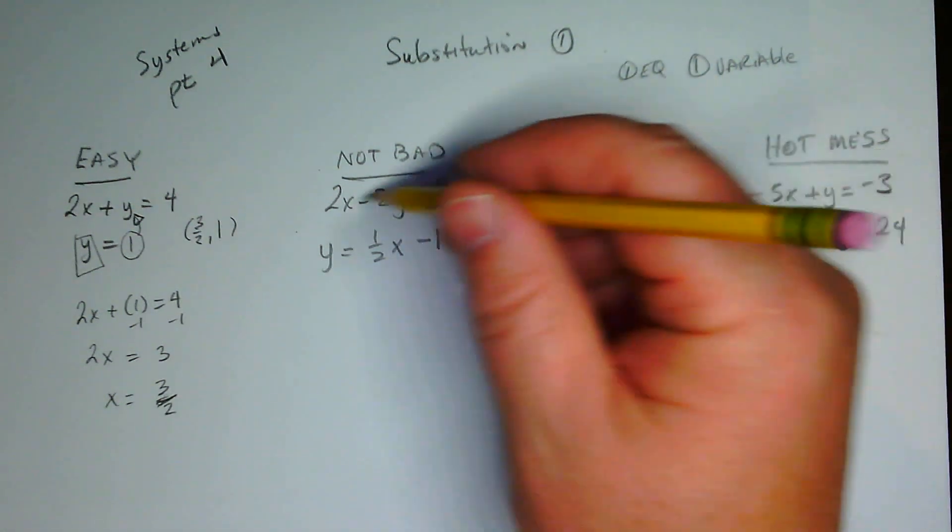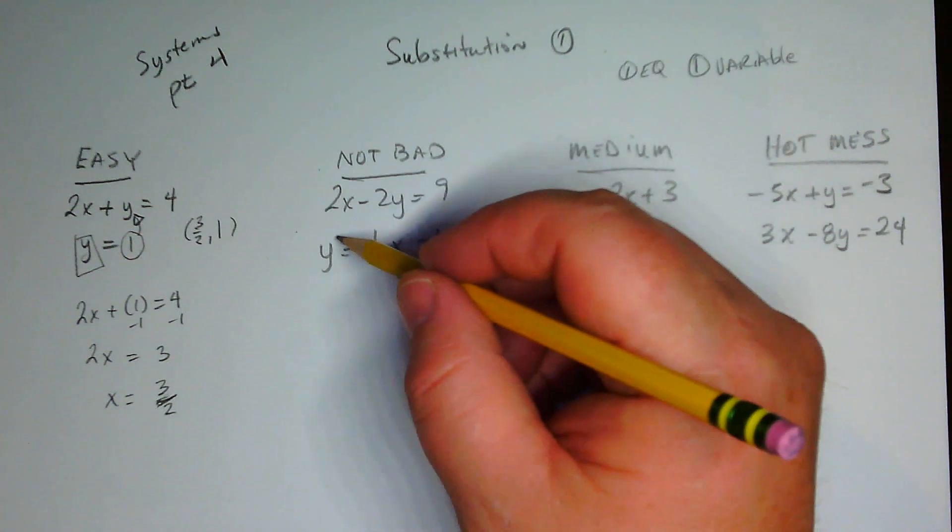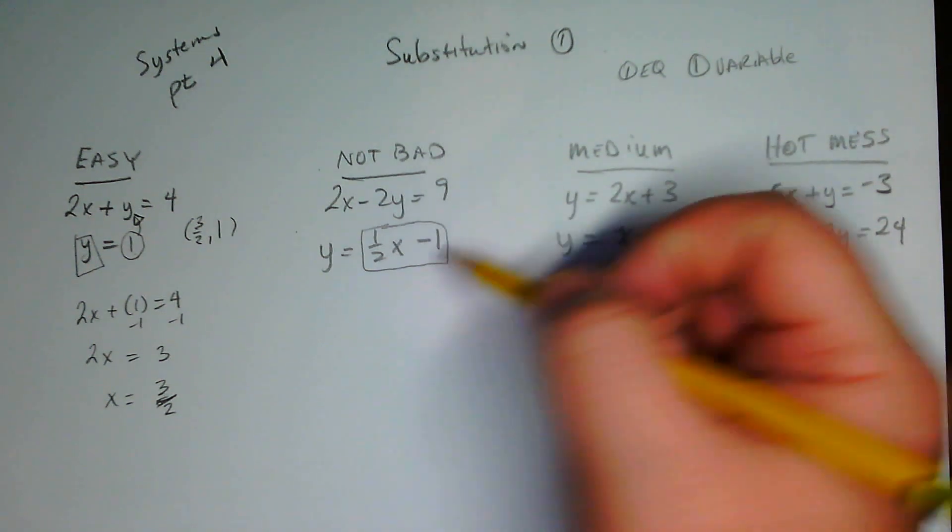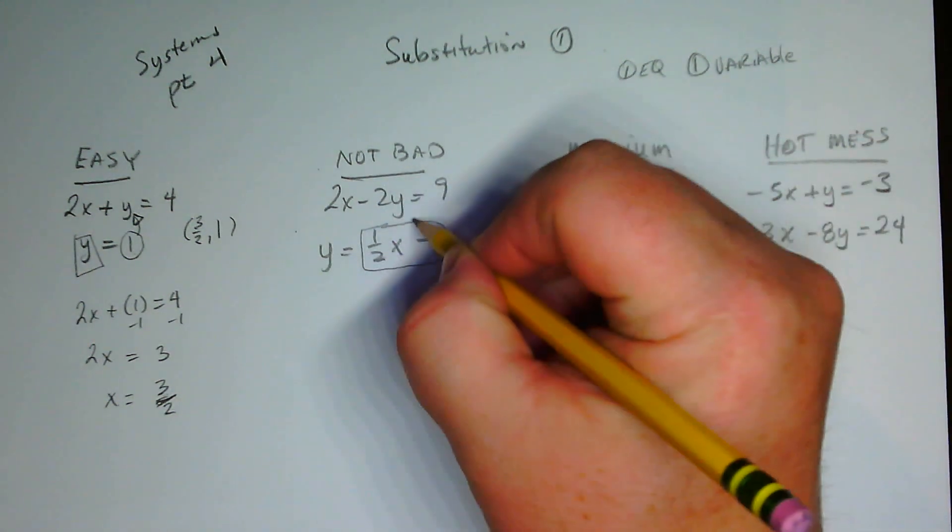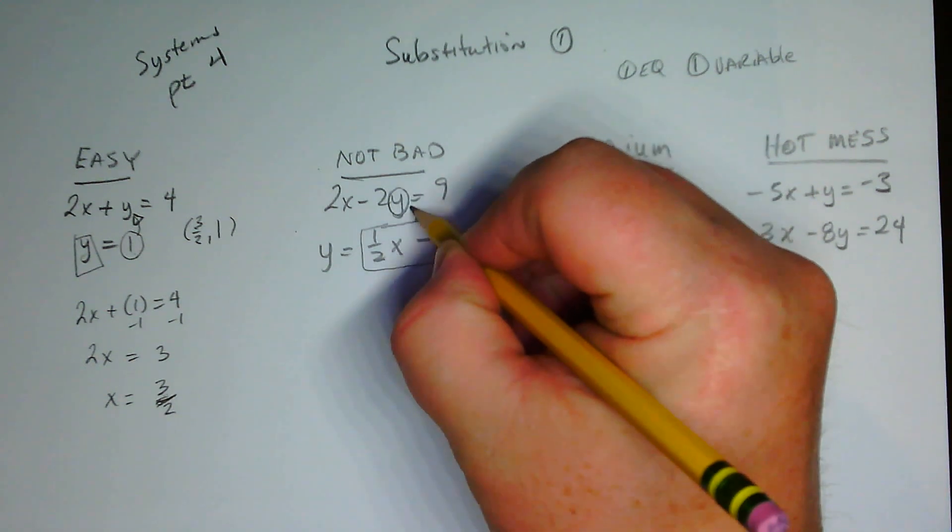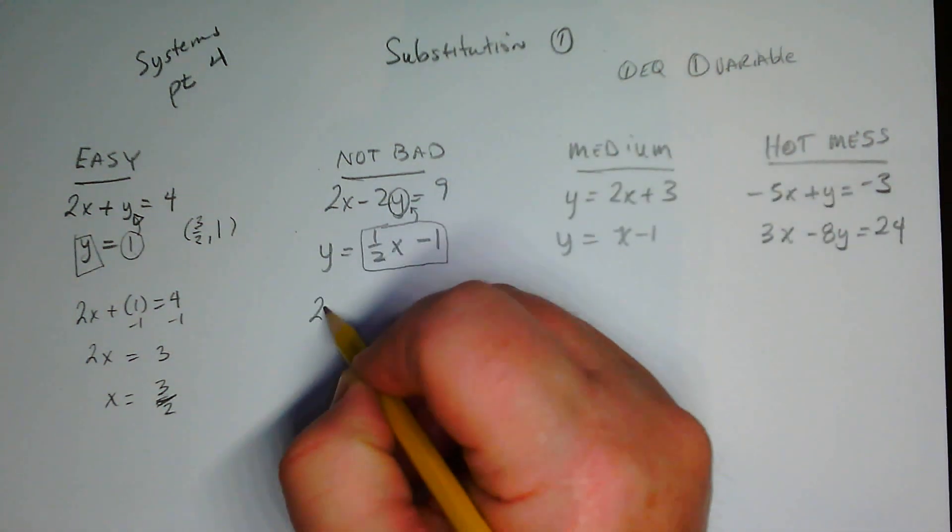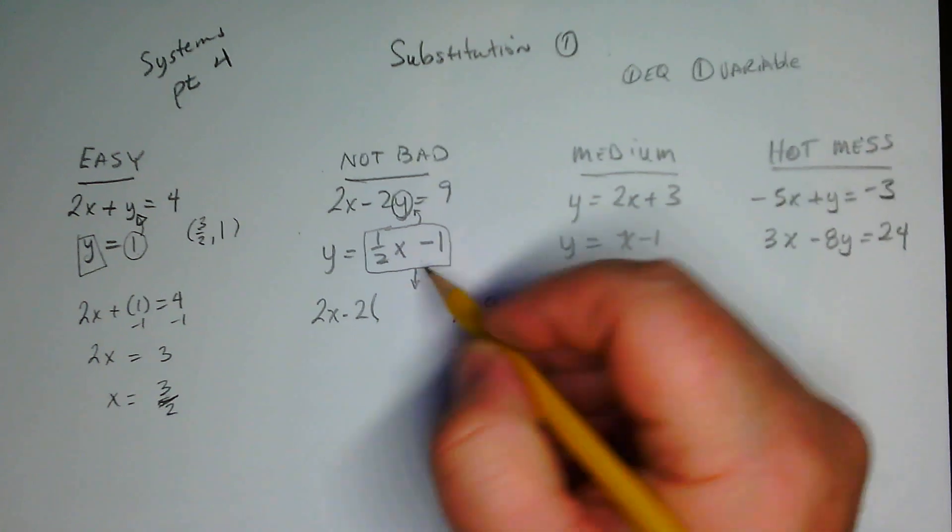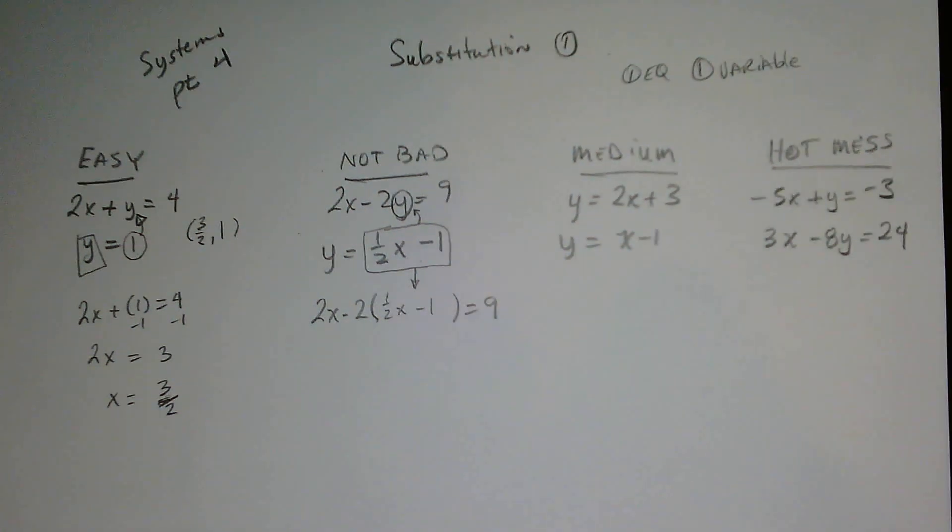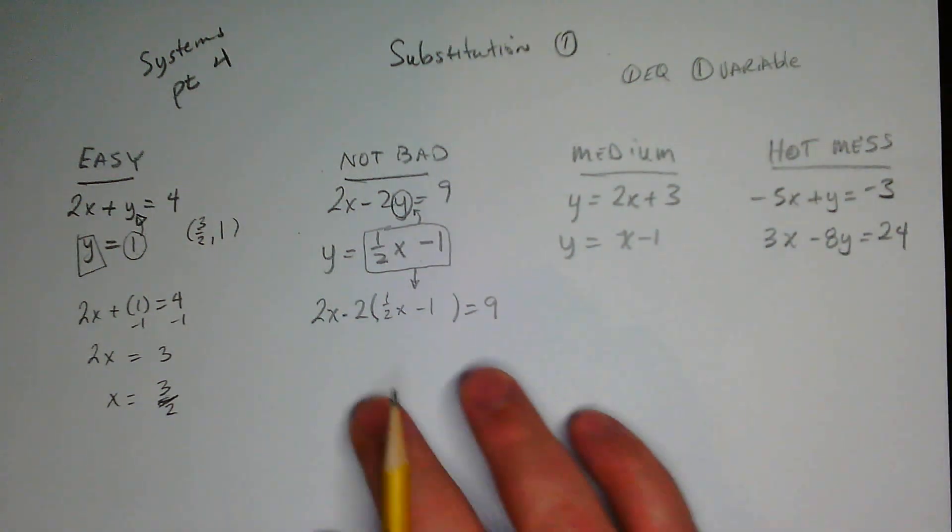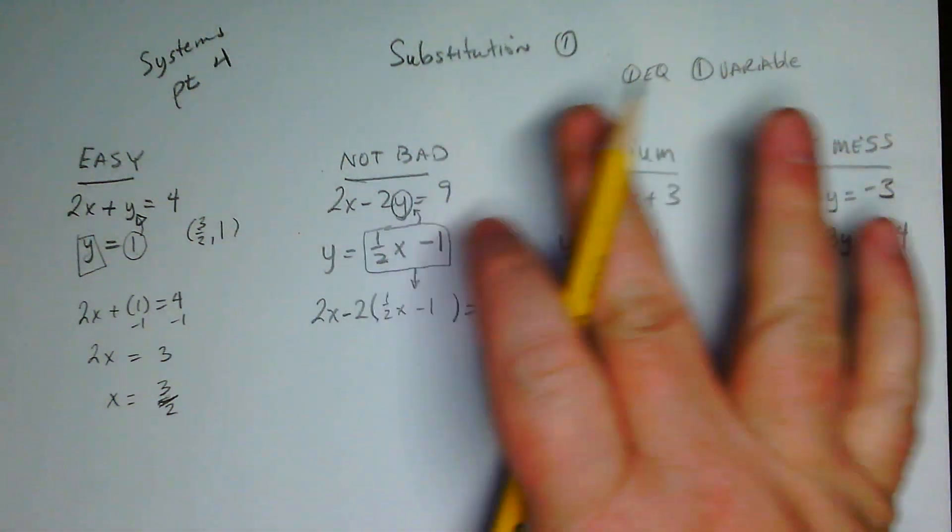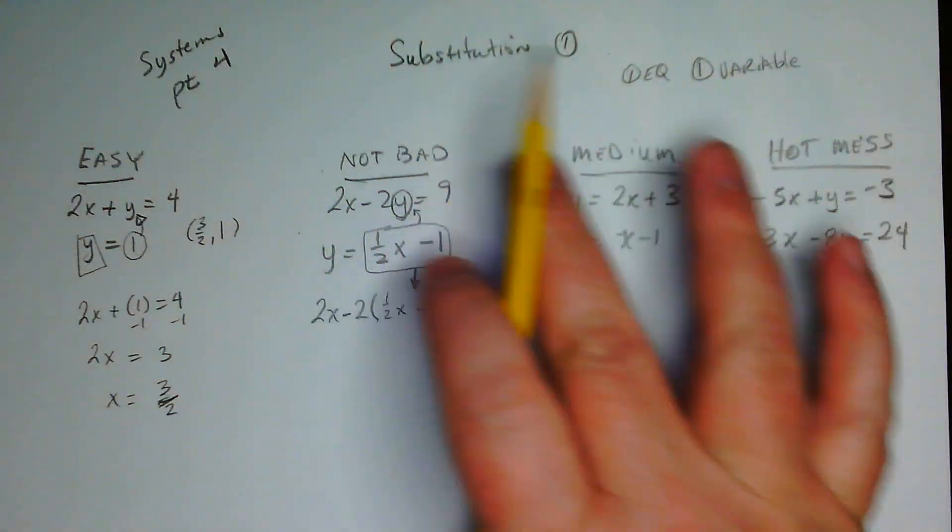Now let's say it wasn't that easy. We would take this and plug it back in, and we're going to show you how that works right over here in the not-so-bad area. Next one, let's say you had something like this: 2x minus 2y equals nine, and here we have y equals one half x minus one. So here we had y equals a number, now we have y equals an expression. But we know what y equals and we know there's a y right here. So we're going to plug it in. You have to use parentheses: 2x minus 2, parentheses, equals nine. This thing is going to go right in there: one half x minus one.